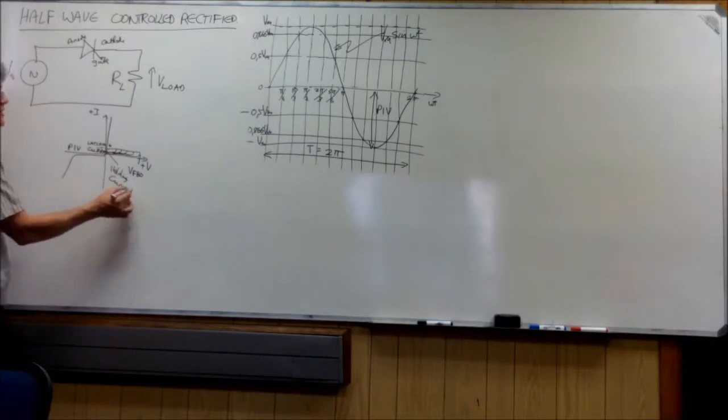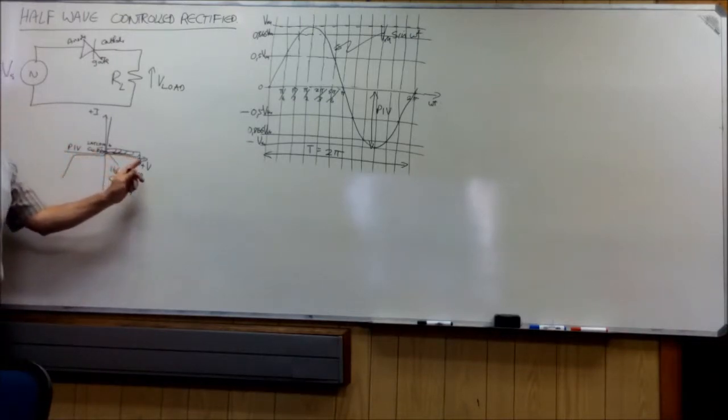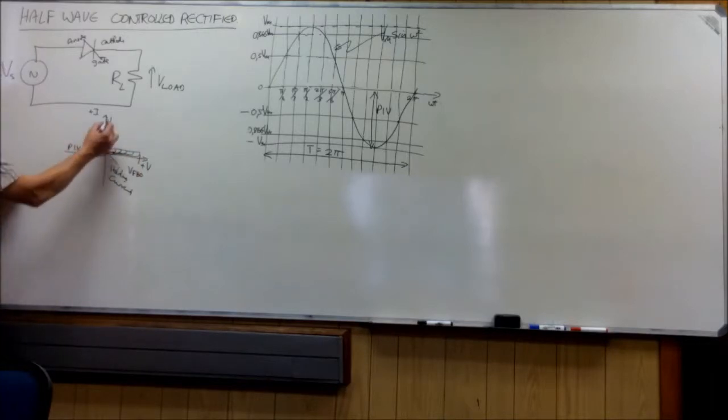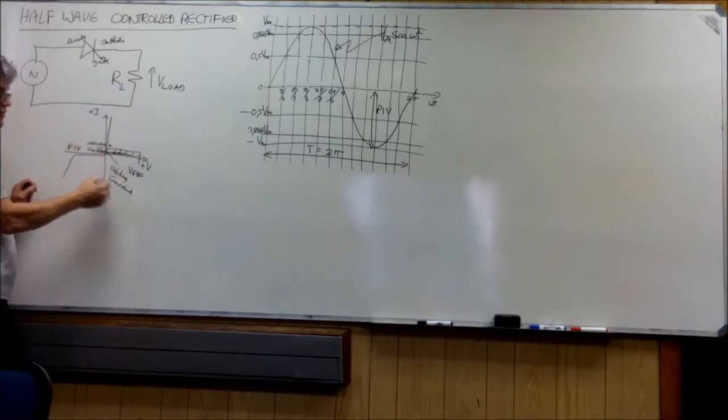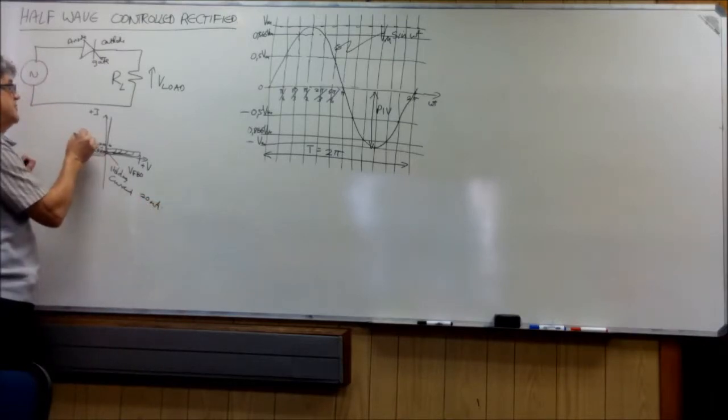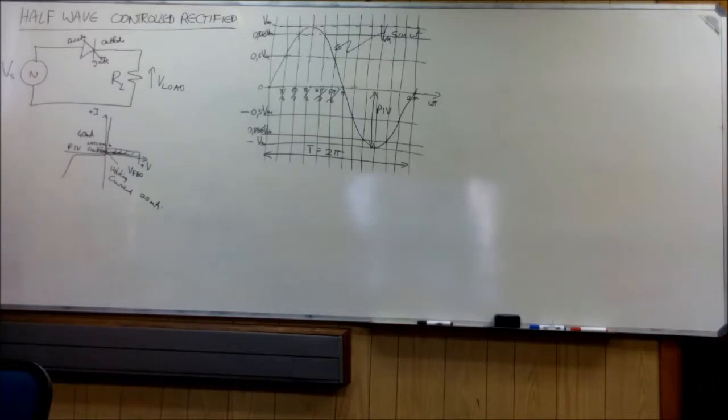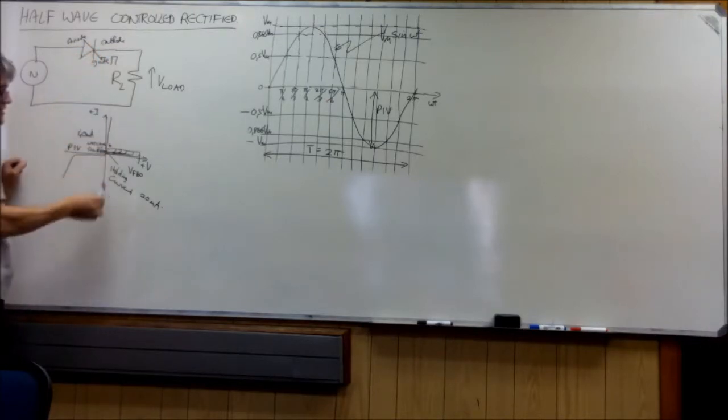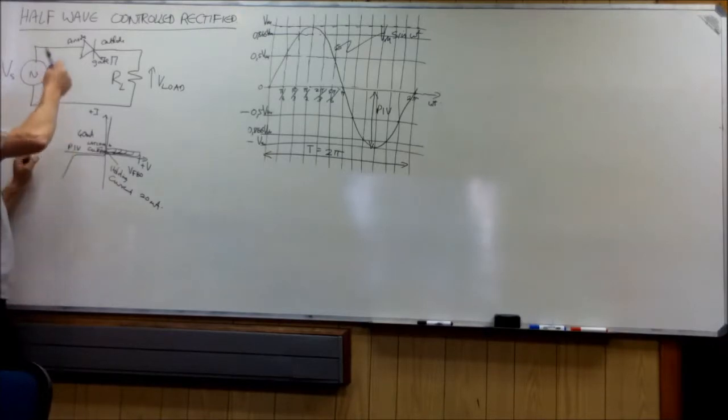So once we get this device to switch on, it acts like a diode and it will only switch off once the current has been reduced to the holding current. The holding current is usually about 20 milliamps and the latching current is usually about 40 milliamps. So you must apply a voltage onto the gate and you must keep that voltage on the gate until it reaches the latching value. Then you can take away the voltage on the gate.